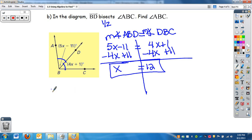So that's the value of X. Now I need to figure out what each one is. I can plug into either one. I have 4 times 12 plus 1. I'm going to find the measure of angle DBC first. 4 times 12 is 48 plus 1 is 49. So I know this angle is 49. Well these two are congruent, so this should be 49, which means my measure of angle ABC is 98 degrees.